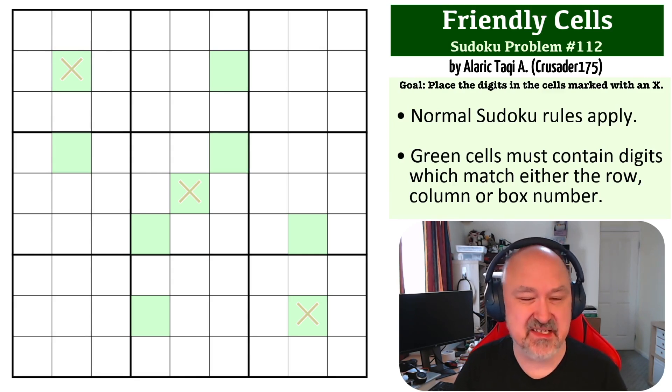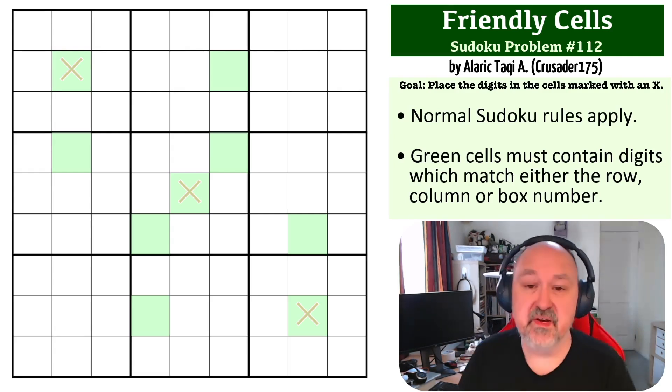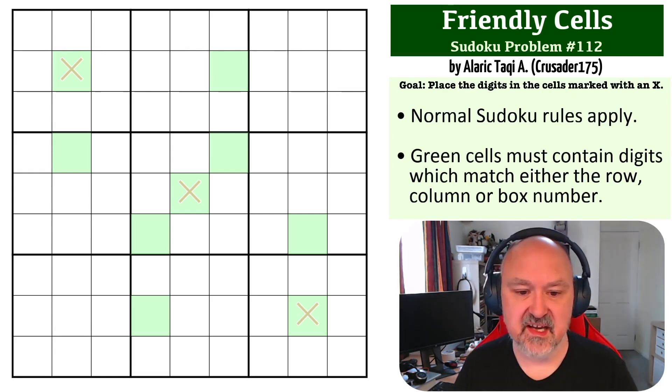I actually haven't had any submissions in the last couple of months but I'm just working through the backlog. You may see a bunch from the same setters because some setters submitted a couple dozen problems and I've got this huge backlog. Anyway, let's have a look at this one. Friendly Cells by Crusader 175, Alaric Taki A.